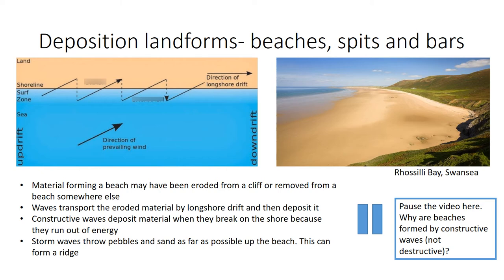Storm waves throw pebbles and sand as far as possible up the beach, which may form a ridge above the high tide mark. Although we think of beaches as permanent features, in fact they're temporary and often change every day. Beaches can be mainly made up of sand, and sandy beaches tend to be flat. Strong onshore winds can also blow sand inland to form sand dunes at the back of the beach, like the ones we see at Hunstanton. They're held in place by marram grass, a coarse grass that helps to stabilise them and stop them from moving.